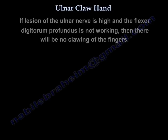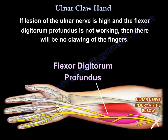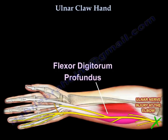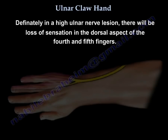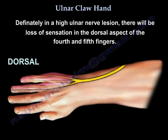If the lesion of the ulnar nerve is high and the flexor digitorum profundus is not working, then there will be no clawing. And in a high lesion, you will have loss of sensation in the dorsal aspect of fingers four and five.